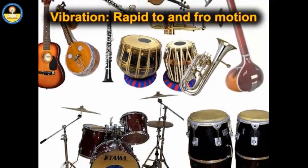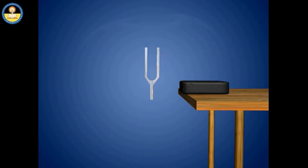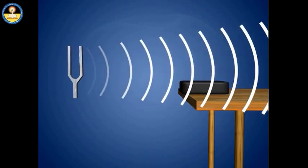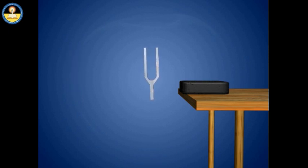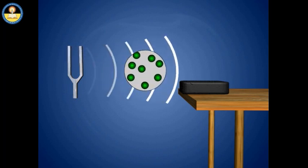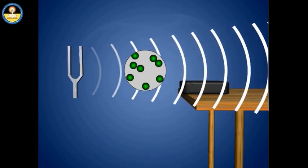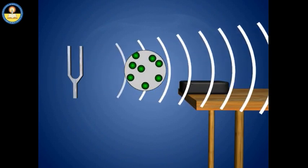Vibration means a kind of rapid to and fro motion of an object. A tuning fork is capable of vibrating if struck on a rubber pad. It is a metal object consisting of two prongs formed from a U-shaped bar of elastic metal, most commonly steel. As the prongs of the tuning fork vibrate back and forth, they begin to disturb surrounding air molecules by passing on their energy to adjacent air molecules. This makes the air vibrate.